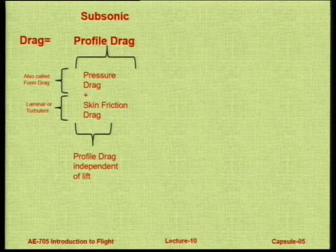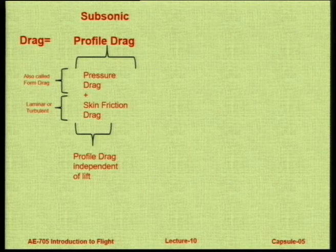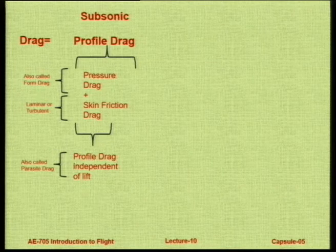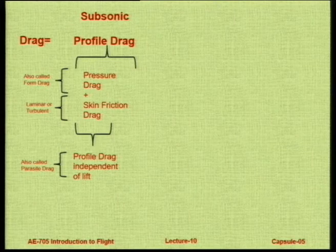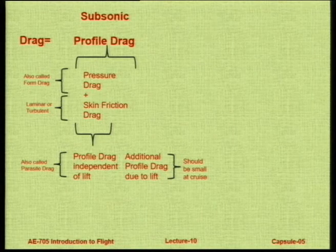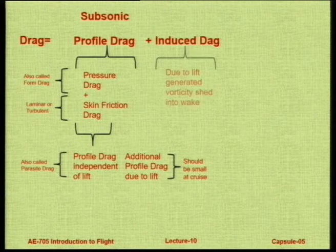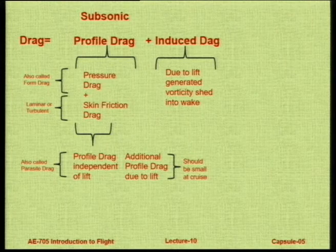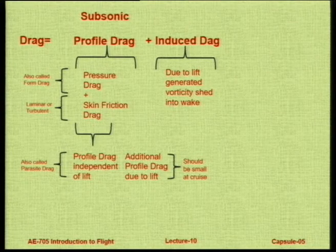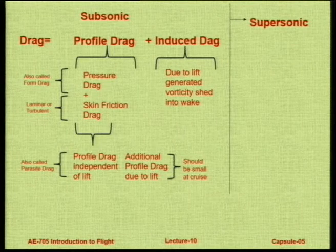Profile drag that does not depend on lift is also called parasite drag. When lift is generated, there is an additional profile drag component due to lift. Induced drag is only lift-dependent — if there is no lift, there is no induced drag. It occurs because of the vorticity shed in the wake from the generated lift. This is the story of subsonic drag.